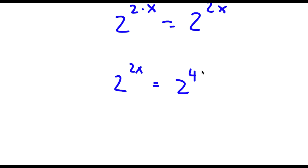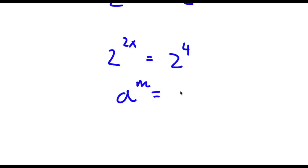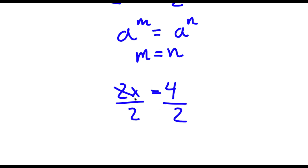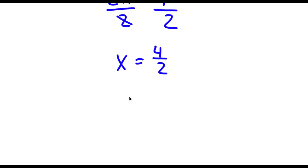Now, if I have something in the form a to the power of m is equal to a to the power of n, this means that m is equal to n. So in this case, 2x is equal to 4. Now I have a simple equation — all I have to do is divide both sides by 2. These two cancel out, leaving x is equal to 4 over 2, which is simply 2. So x is equal to 2.